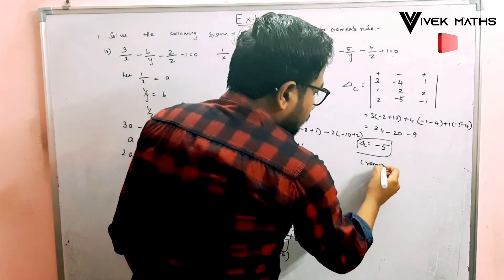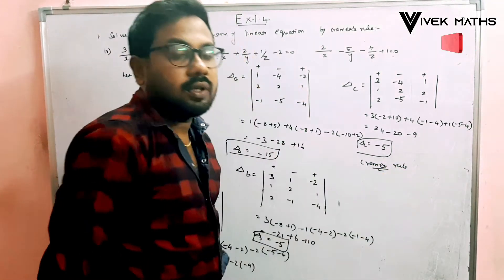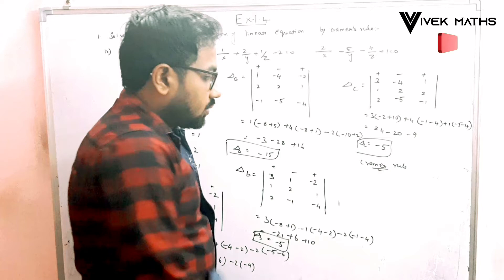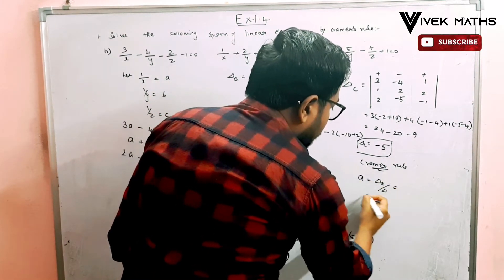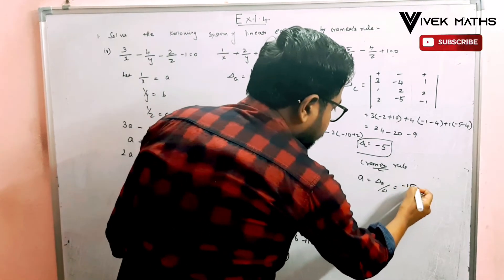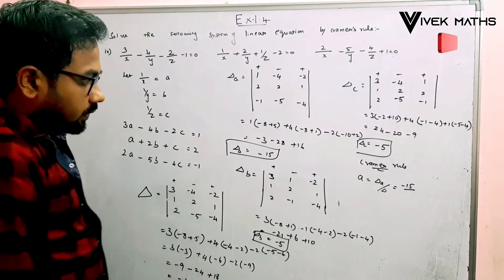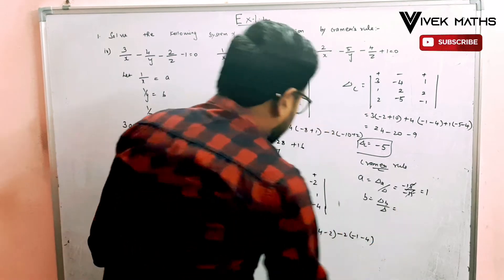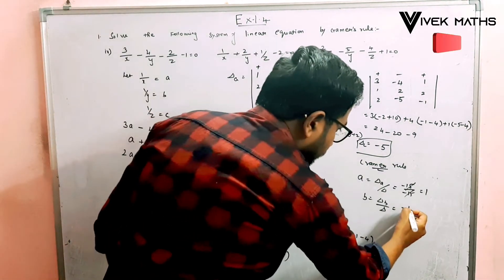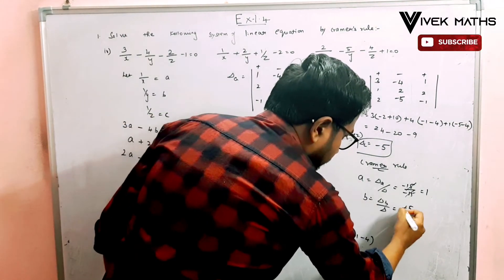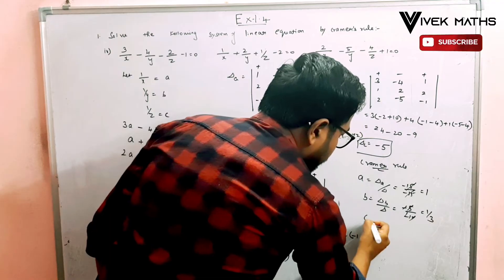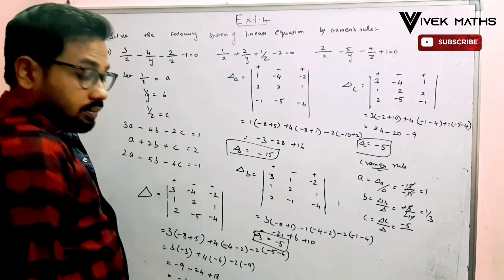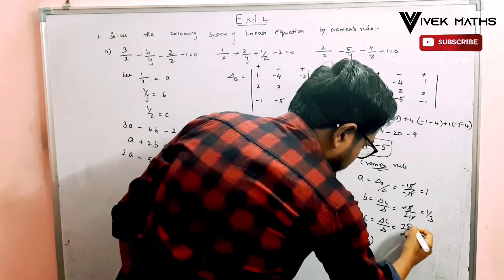Applying Cramer's rule: a equals delta_a over delta, which is minus 15 over minus 15, giving a equal to 1. b equals delta_b over delta, which is minus 5 over minus 15, giving b equal to 1/3. c equals delta_c over delta, which is minus 5 over minus 15, giving c equal to 1/3.